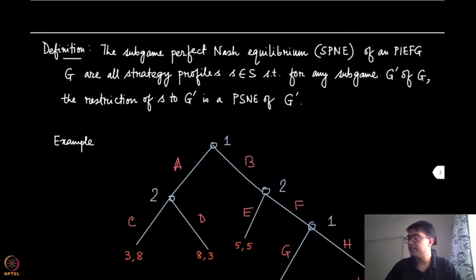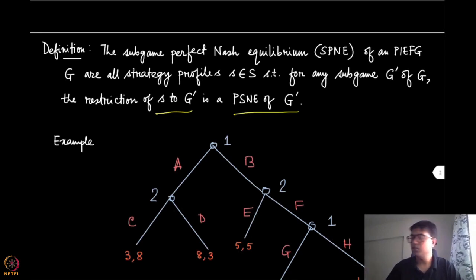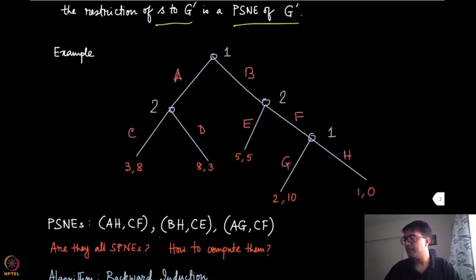Notice that the restriction of S to G' should be a PSNE of that subgame. By restriction, you prune all strategies not relevant for G' — whatever remains is the restriction of S to G'. Let us apply this to the same example we started with. There are three PSNEs, and we will check one by one whether they are all subgame perfect Nash equilibria.